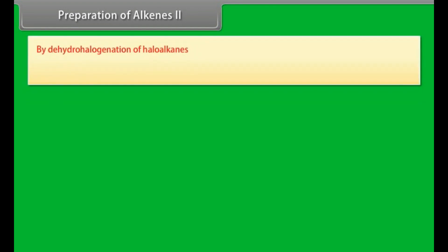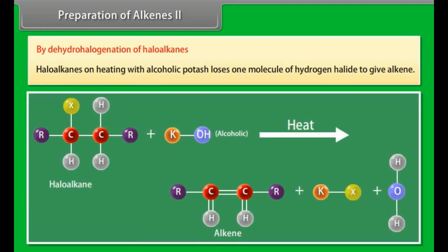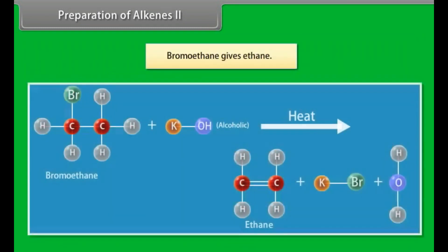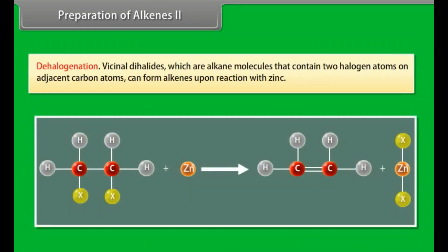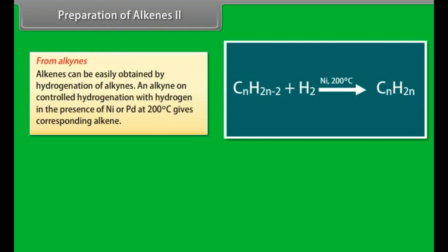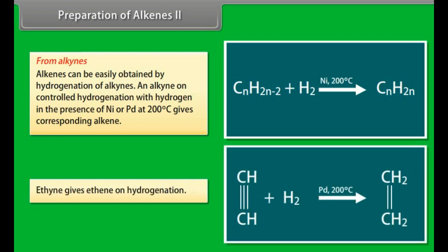Preparation of alkenes Part 2. By dehydrogenation of haloalkanes. Haloalkanes on heating with alcoholic potash lose one molecule of hydrogen halide to give alkene. Bromoethane gives ethene. Dehalogenation. Vicinal dihalides, which are alkane molecules that contain two halogen atoms on adjacent carbon atoms, can form alkenes upon reaction with zinc. From alkynes. Alkenes can be easily obtained by hydrogenation of alkynes. An alkyne on controlled hydrogenation with hydrogen in the presence of Ni-Pd at 200 degrees centigrade gives corresponding alkene. Ethyne gives ethene on hydrogenation.